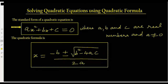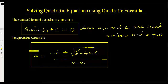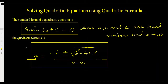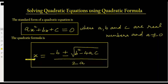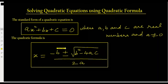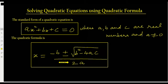Now, here is the quadratic formula — you can memorize it, it's easy to remember. To find the value of x: x is equal to negative b plus or minus the square root of b squared minus 4ac, divided by 2a.